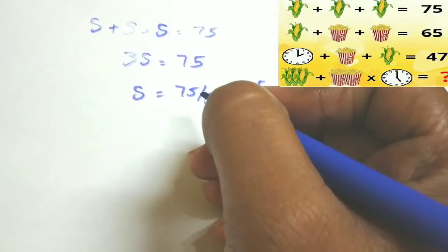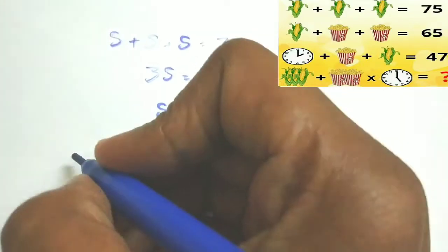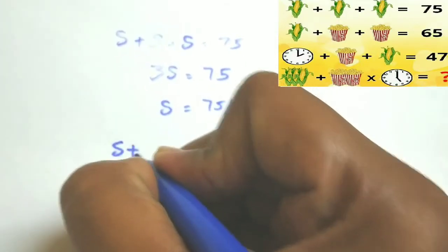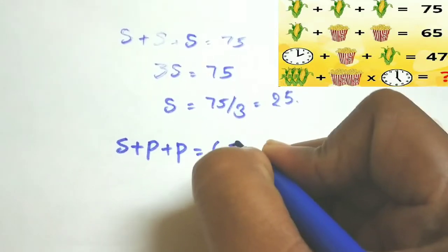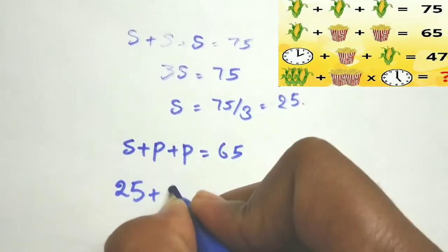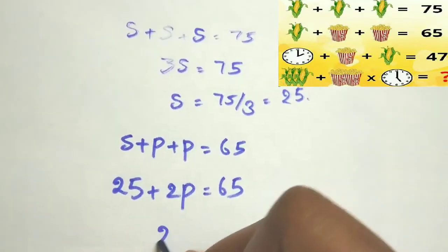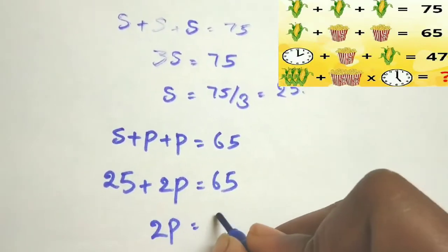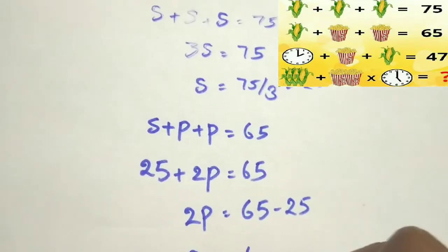Come to the second line. In the second line they given that sweet corn plus popcorns are there, two popcorns. So sweet corn plus popcorn plus popcorn is equal to 65 they given. Sweet corn value already you know, substitute 25 plus 2 popcorn is equal to 65.